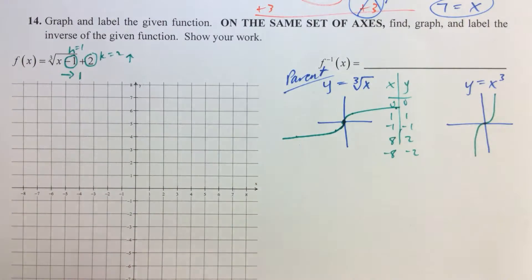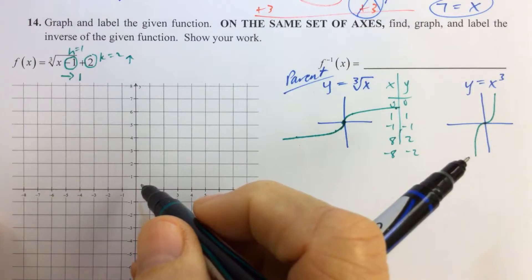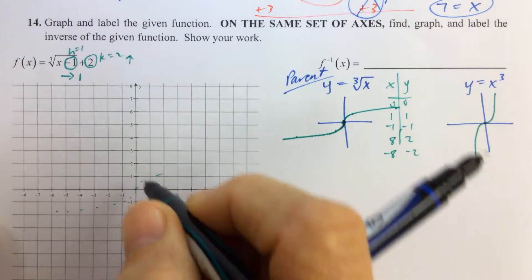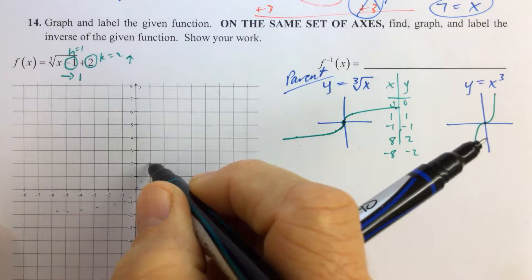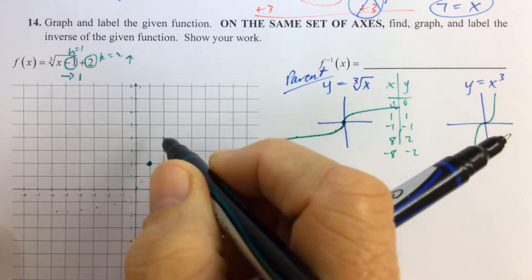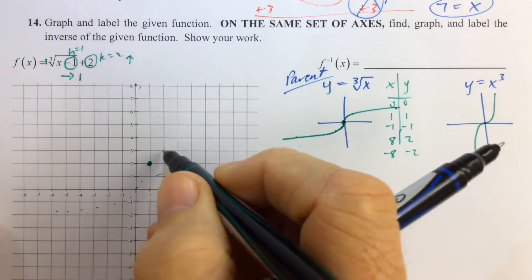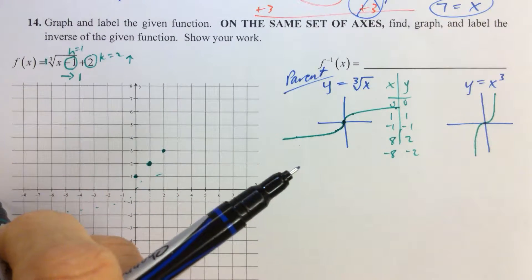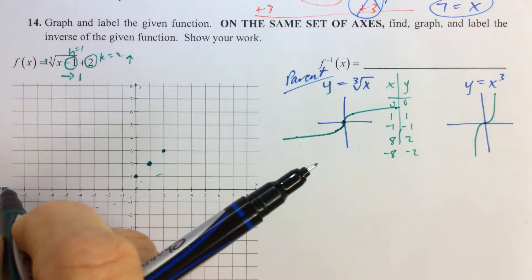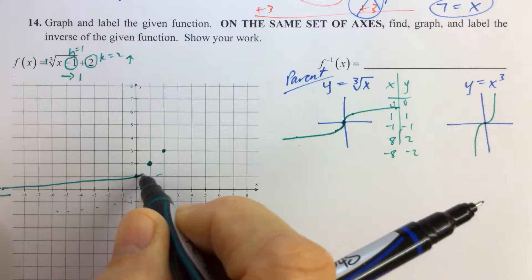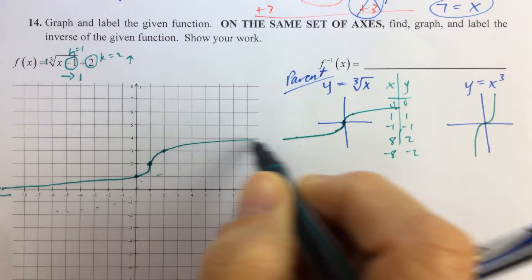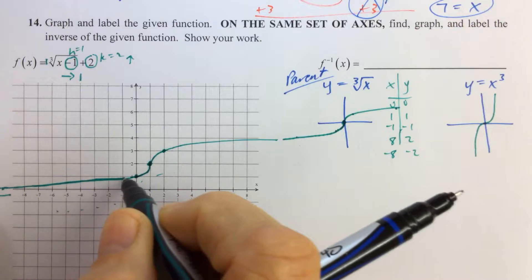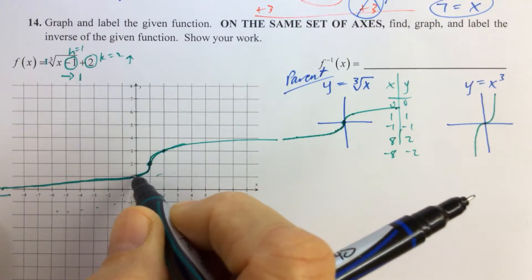The inflection point of y equals cube root of x is our h, k — same exact thing. So we go right 1 and up 2. If the a value is 1, there's going to be a dot one unit to the right and one unit above the inflection point, and one unit to the left and one below, just like there was at (1,1) and (-1,-1) on the parent. Then we draw the graph coming through, showing the S-shape — the main concern is that you show the curve going like this, coming up and going over, showing this little S shape.